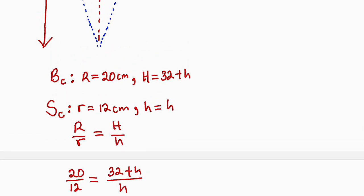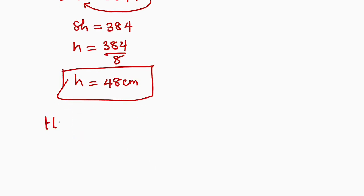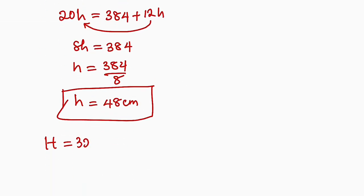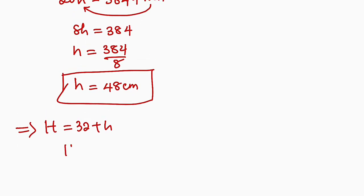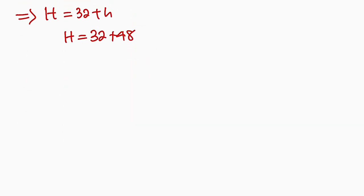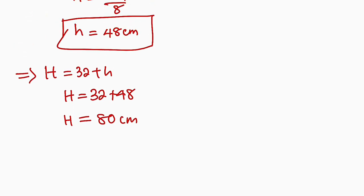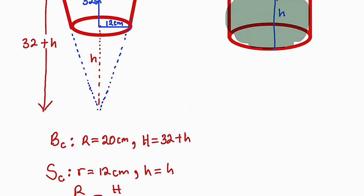To obtain the height of the bigger cone, we plug in h = 48. Therefore, capital H = 32 + h = 32 + 48 = 80 cm. So capital H is 80 cm.